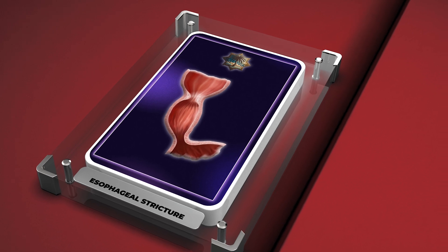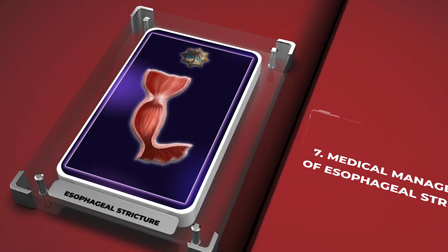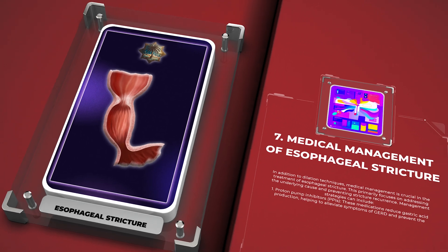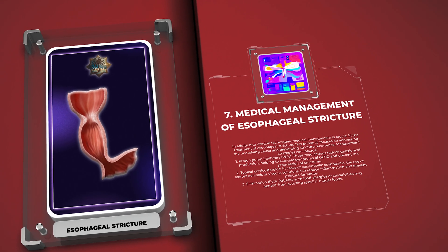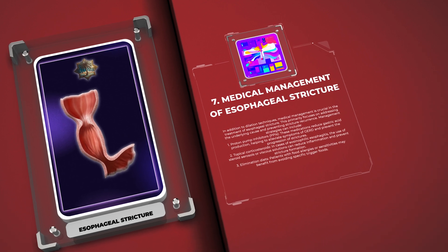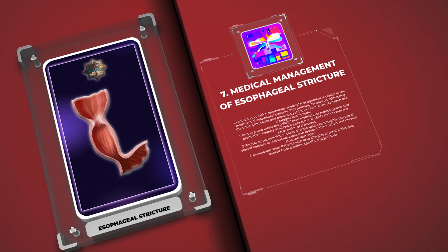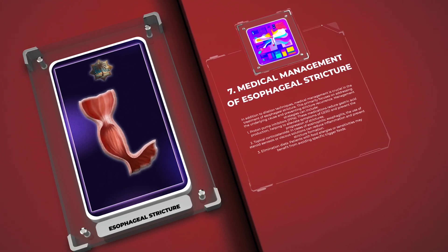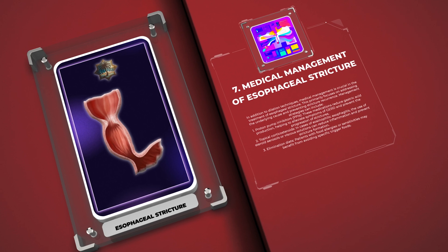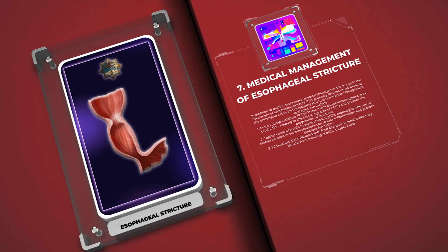In addition to dilation techniques, medical management is crucial in the treatment of esophageal stricture, primarily focusing on addressing the underlying cause and preventing stricture recurrence. Management strategies include: 1. Proton pump inhibitors (PPIs) — these medications reduce gastric acid production, helping to alleviate symptoms of GERD and prevent progression of strictures. 2. Topical corticosteroids — in cases of eosinophilic esophagitis, steroid aerosols or viscous solutions can reduce inflammation and prevent stricture formation. 3. Elimination diets — patients with food allergies or sensitivities may benefit from avoiding specific trigger foods.